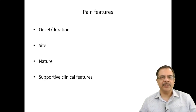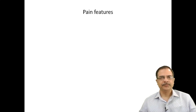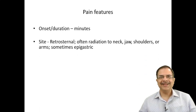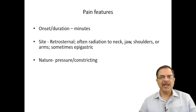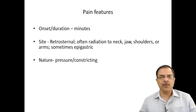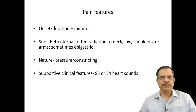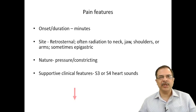Starting with chest pain of duration in minutes: the site is retrosternal, radiating to the neck, jaw, shoulder, arms, or sometimes to the epigastric area. When we ask about the nature of the pain, the patient will describe pressure or tightness. On clinical examination we may find S3 or S4 on auscultation.